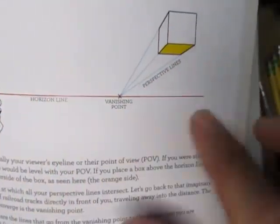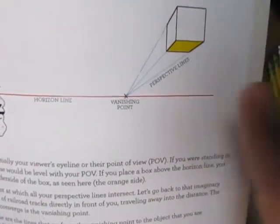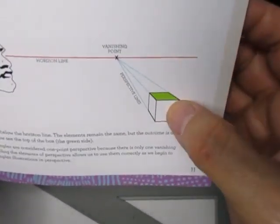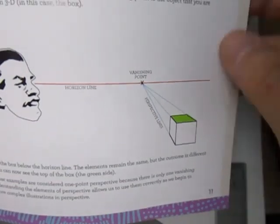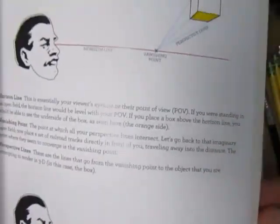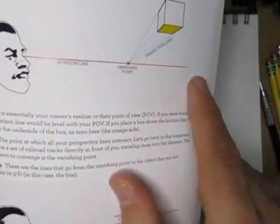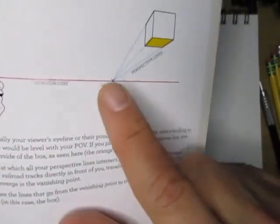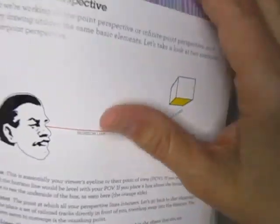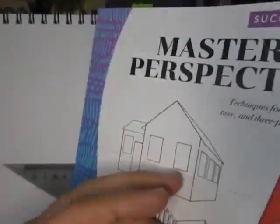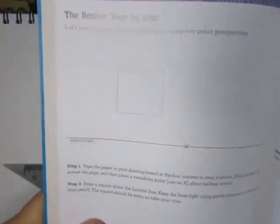This is the horizon line there, it's all going to be coming from that X coming out at you, and a lot of buildings use one point perspective in building shots in comics and things like that. You see that a lot. And you notice how it can go down as well. This is the horizon, the horizon line, the vanishing point, perspective lines, pretty self-explanatory.